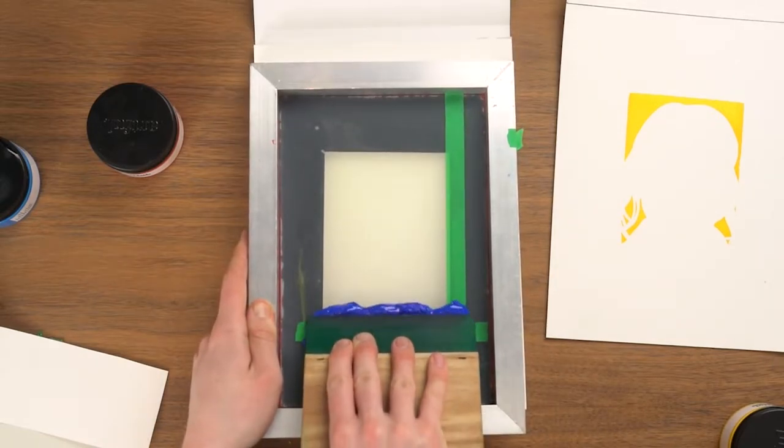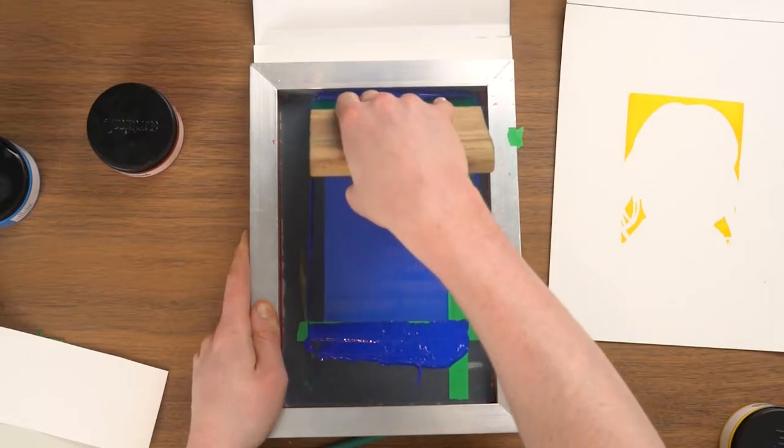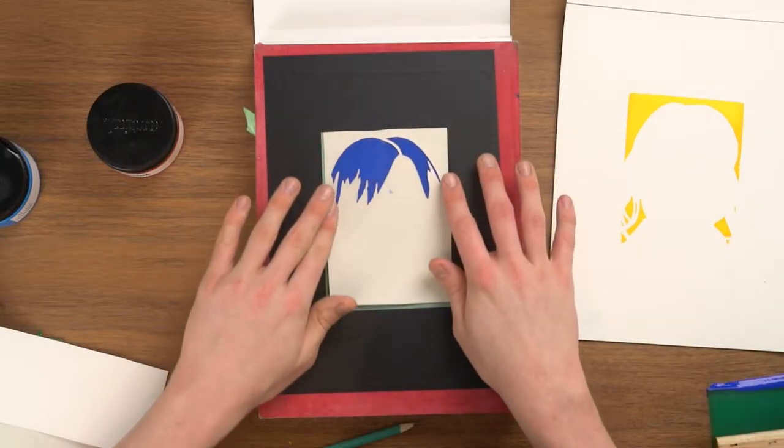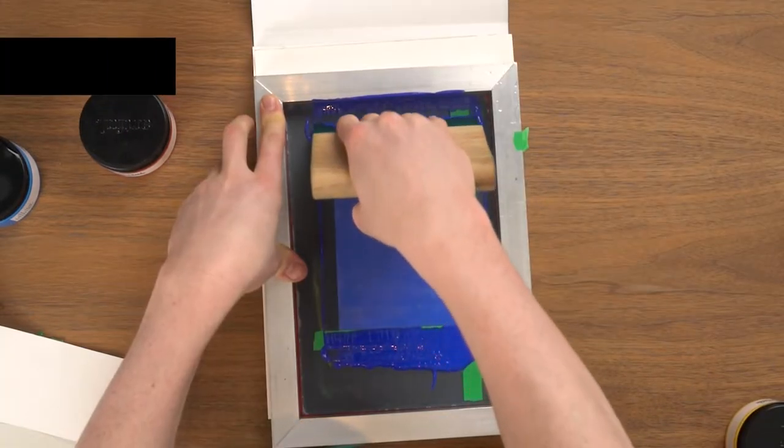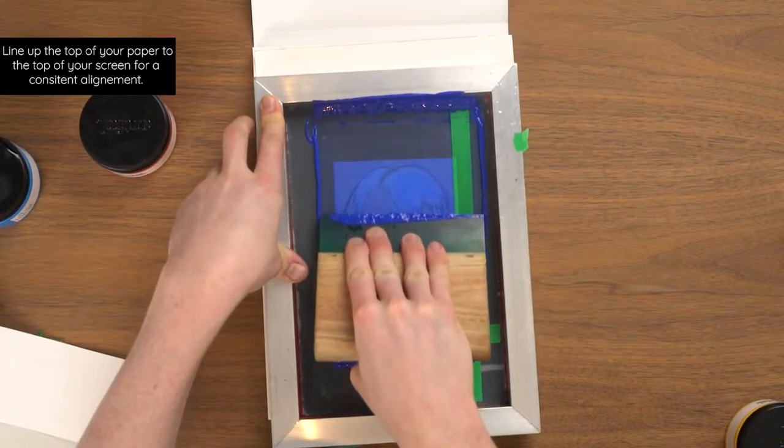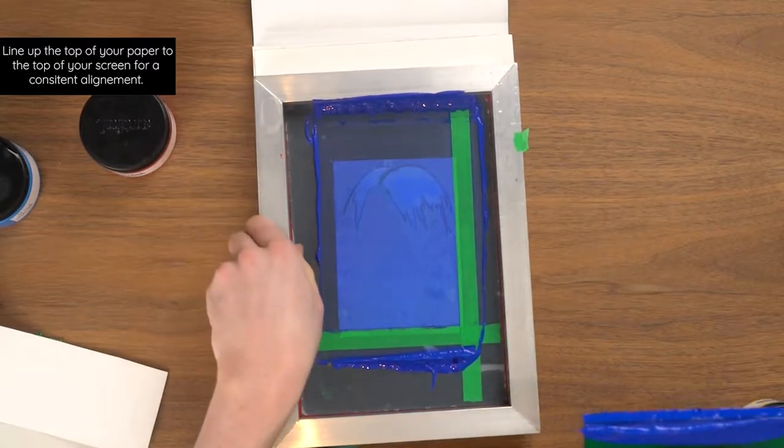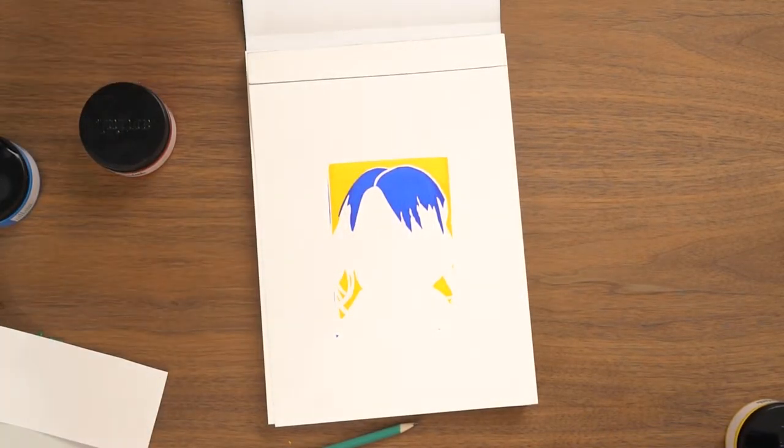This darker blue is a color from our upgrade box, a link for which will be in the description. I then flip the screen, align my stencil to the printing area, flip the screen again and pull the paint towards myself so the dark blue hair layer prints on top of the yellow that we've already made. And then straight to the sink.